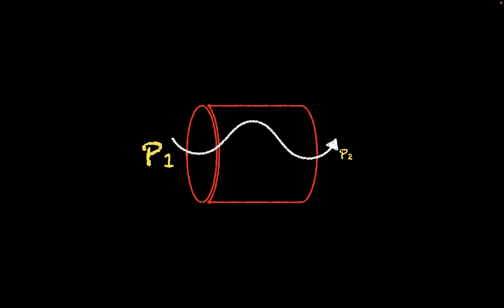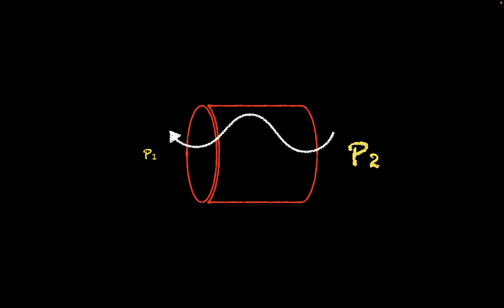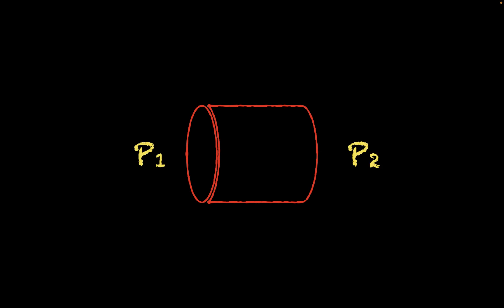What if we reverse the scenario where side two has a greater pressure than side one? In that case, the blood would flow in the opposite direction, from side two to side one. And if we make the pressures on both sides equivalent, the flow would actually equal zero, because there is no difference in pressure between the two sides.